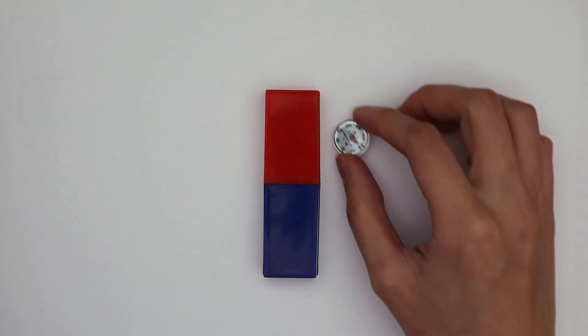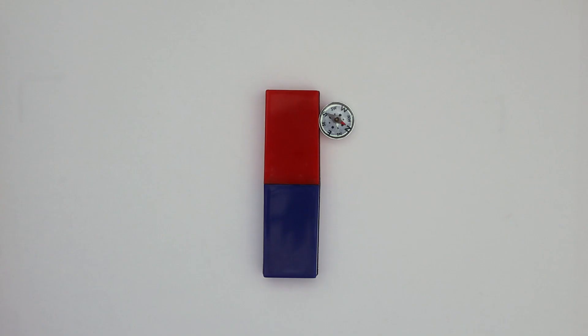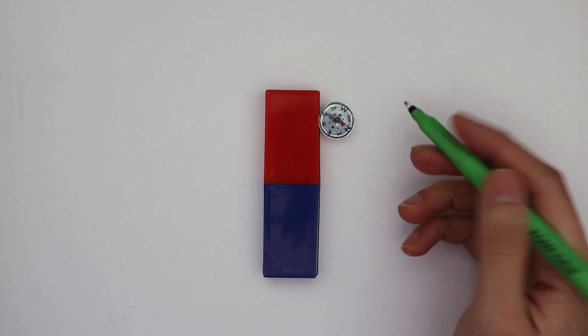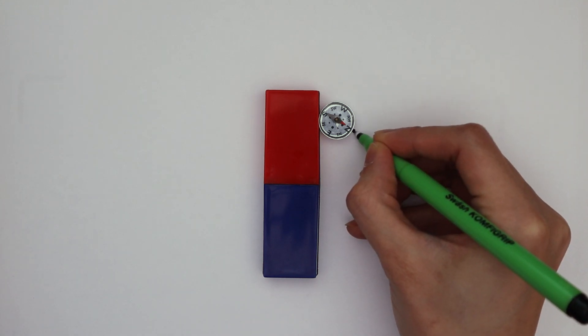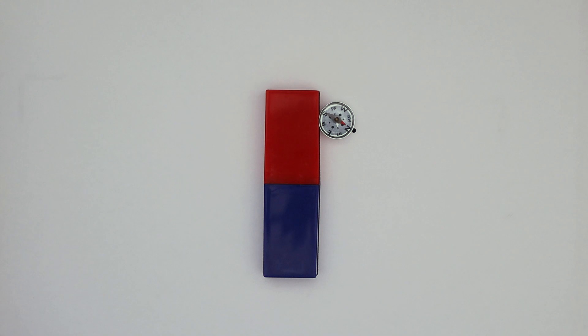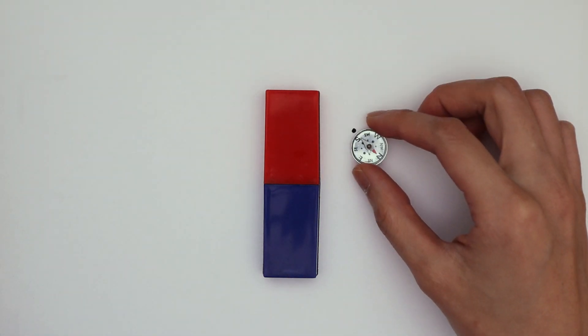Place the plotting compass near the magnet. Mark the direction that the compass needle points by drawing a dot. After the first plot, move the compass so that the back of the needle lines up with the dot.